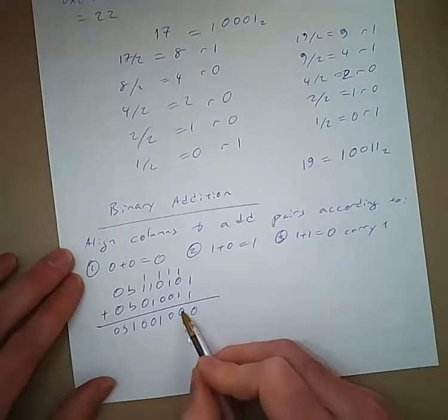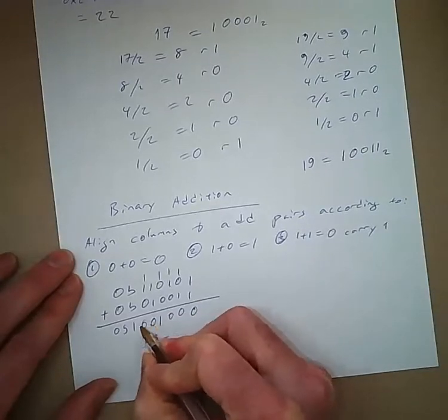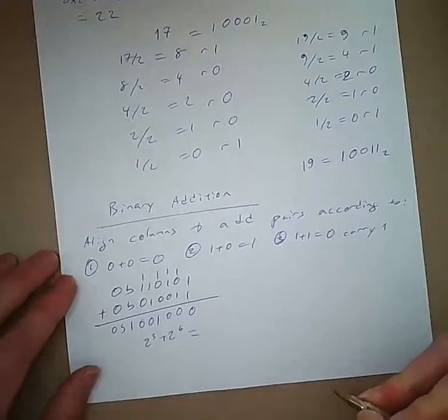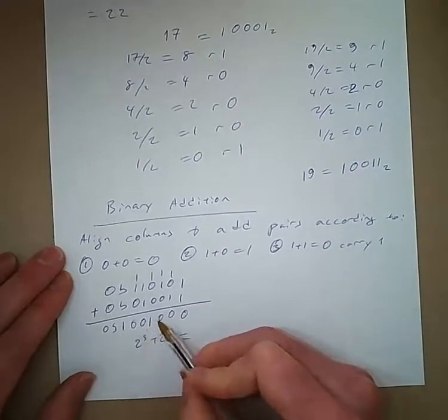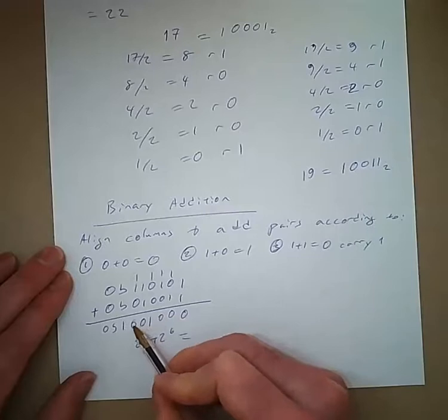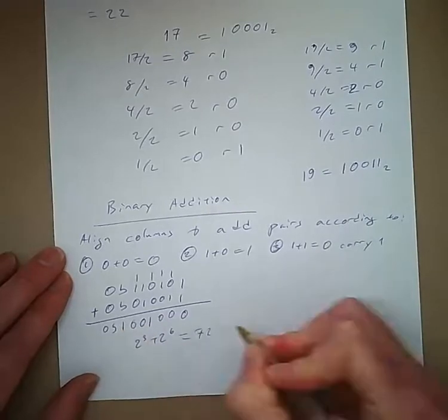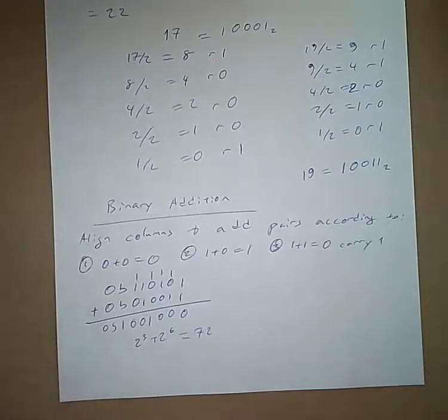This ends up being 2 to the 0, 1, 2, 3. 2 to 3 plus 4, 5, 6. 2 to the 6. That's 1, 2, 4, 8, 16, 32, 64. So 72. It seems like 53 plus 19 is 72.